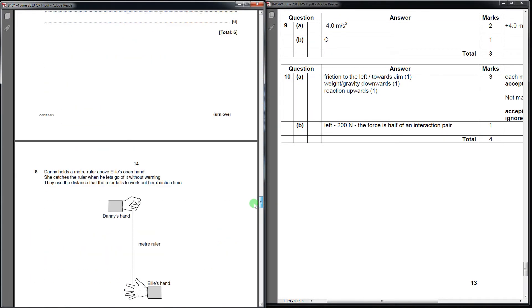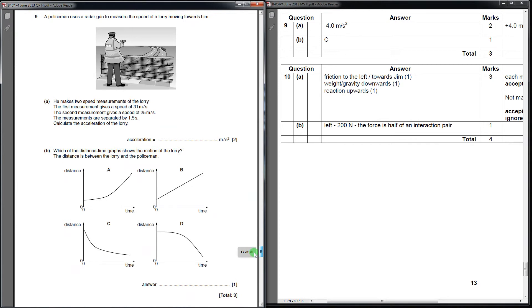It says acceleration is change in velocity divided by time taken. We scroll back down to the question. Change in velocity divided by time taken. The thing to bear in mind here is that speed and velocity are very similar. Remember the difference is that velocity is speed with a direction.